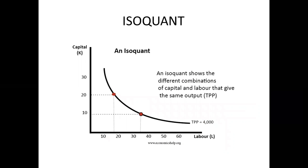To construct producer equilibrium, we require a few things. The first is isoquants. An isoquant is also known as the equal product curve. An isoquant shows the different combinations of labor and capital that give the same output — TPP, total physical product. So when two combinations of labor and capital are combined, it gives us the same level of output.